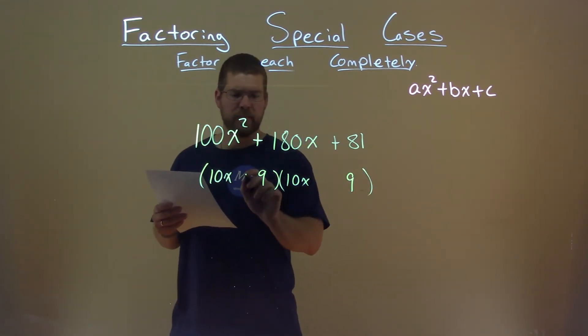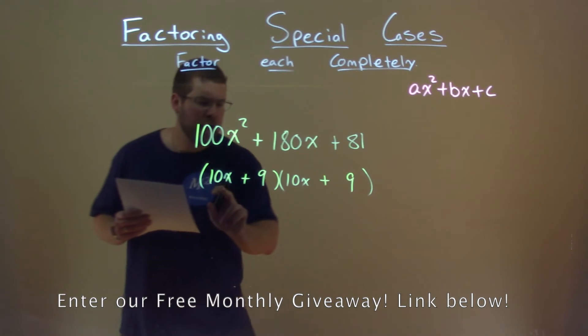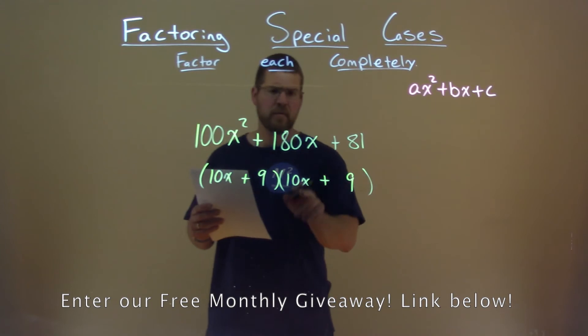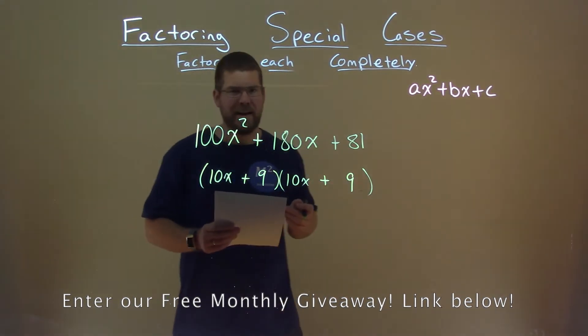Well, how about that b value? If we have positive 9 and positive 9, 10x will then be multiplied by 9, giving me 90x. 9 times 10x is 90x, add them together, we have 180x.